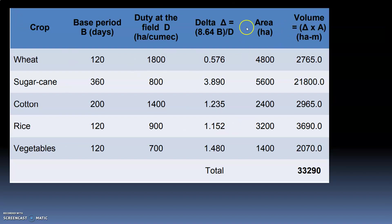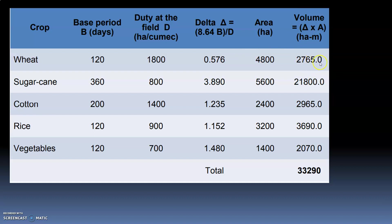For each crop we calculate delta. For wheat: delta = 8.64 × 120 ÷ 1800 = 0.576. Then volume = delta × area = 0.576 × 4,800 = 2,765.